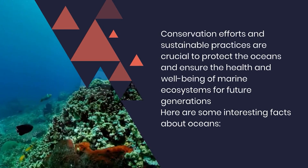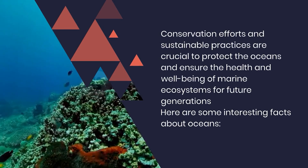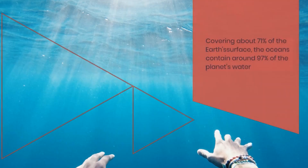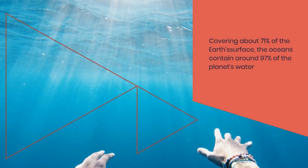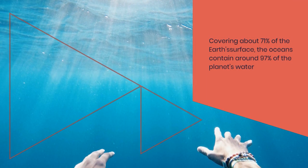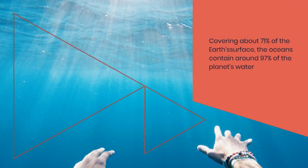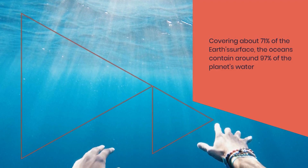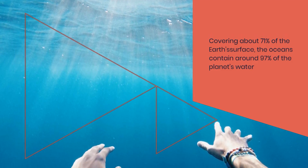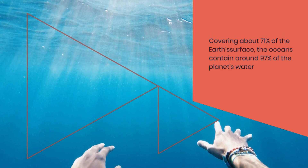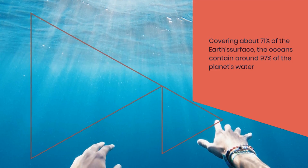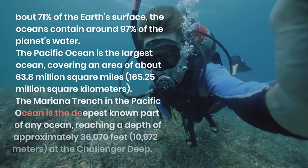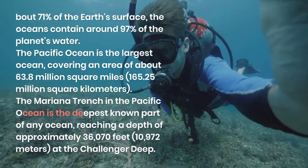Covering about 71% of the Earth's surface, the oceans contain around 97% of the planet's water. The Pacific Ocean is the largest ocean, covering an area of about 63.8 million square miles — 165.25 million square kilometers.